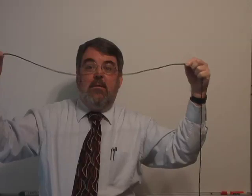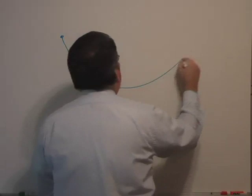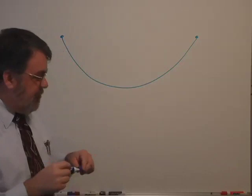So it droops down and comes back up again. That drooping down and coming up is a shape we call a catenary curve. Let me draw a catenary curve. It sags down and goes back up. It looks a lot like a parabola, but it's not a true parabola.